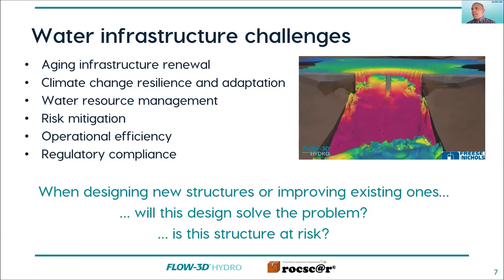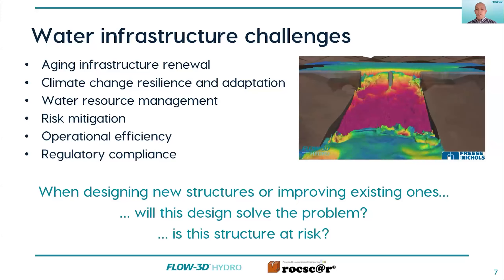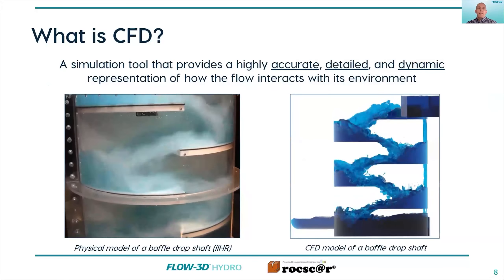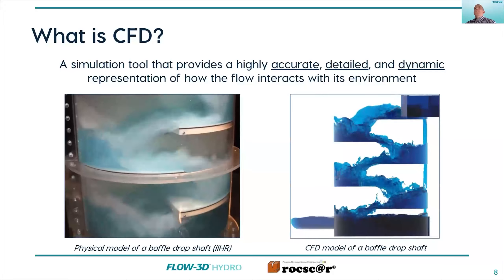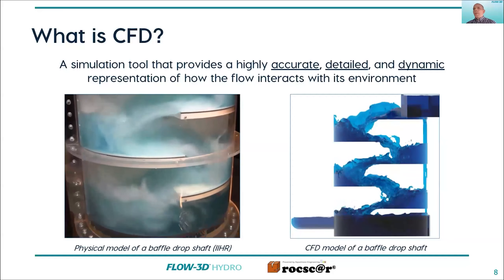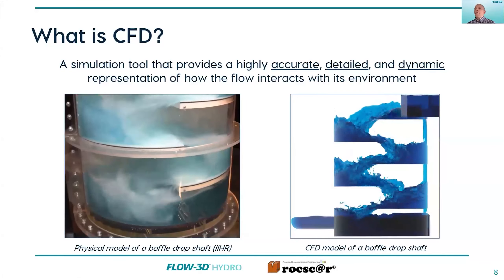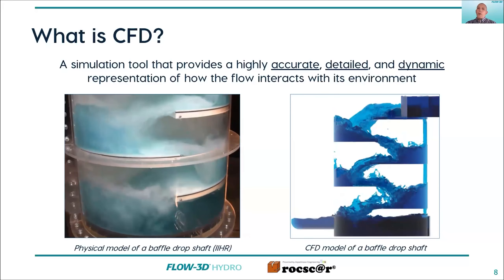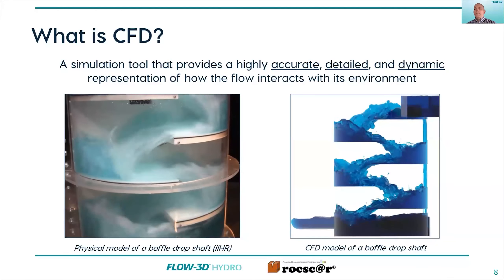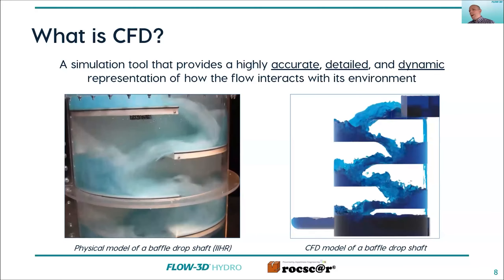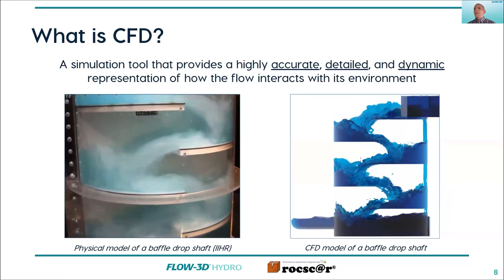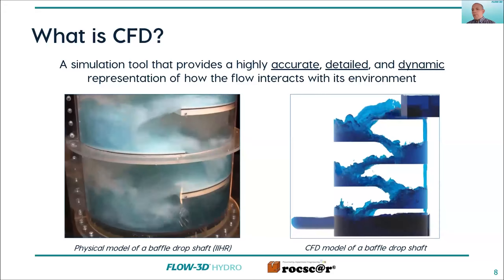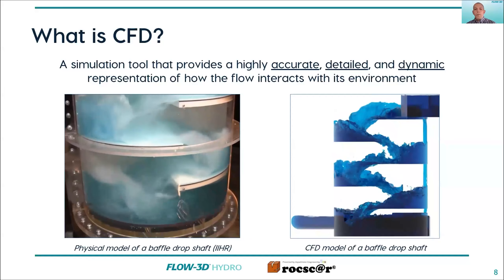CFD is a simulation tool that gives us three-dimensional outputs that are very accurate, detailed, and also dynamic. This is just an example of a physical model — a drop shaft done in the Iowa lab — compared to a Flow3D model on the right. So very dynamic modeling outputs, three-dimensional, high-resolution detail. This is what we're talking about when we're talking about CFD.